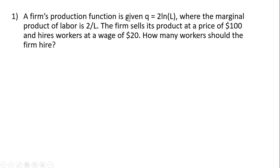Question 1. A firm's production function is given by the following: the quantity of output Q equals 2 times the natural log of labor, where the marginal product of labor — the derivative of this total product of labor function, or short-run production function — is just 2 divided by L. The firm sells its product in a competitive market at a price of $100, and it hires workers in a competitive market at a going market wage of $20.